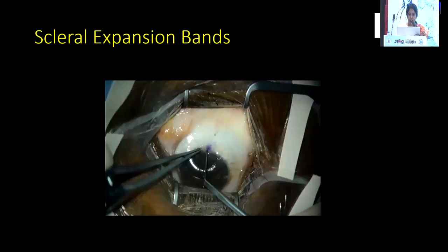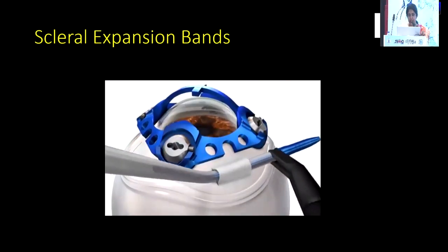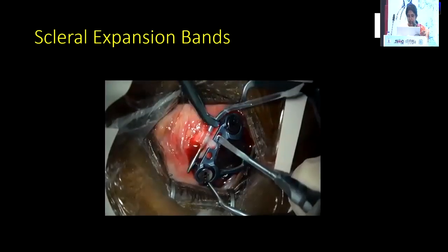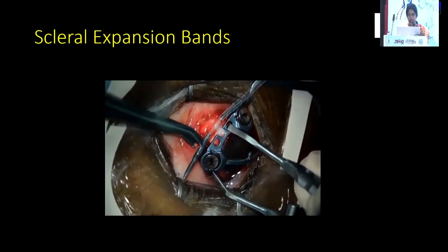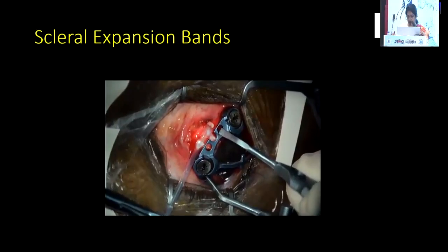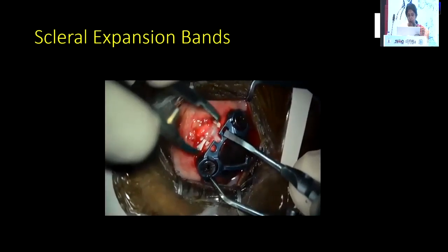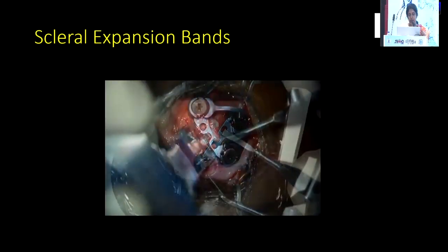This is a scleral-based procedure for presbyopia correction: scleral expansion bands. These are basically PMMA bands placed under the sclera near the ciliary vessels and ciliary muscles. The equatorial zonules are pushed, thereby increasing effectiveness and correcting presbyopia. However, these have their own limitations and are not practiced as routine.